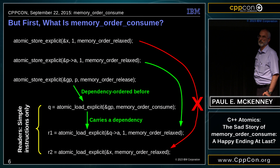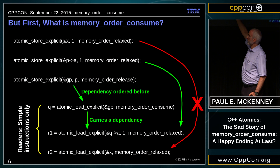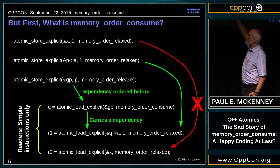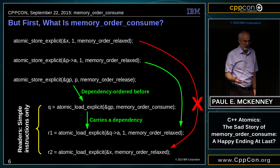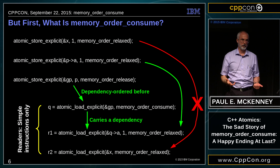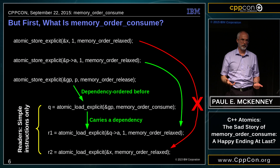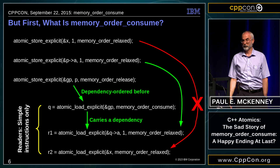Memory_order_consume is nice in that this can just be a normal load on almost all architectures — a very simple instruction, very fast, no artificial slowdown. But there's a penalty; there's no free lunch. If you're going to get the ordering, you have to have dependencies between that initial load and the loads or stores that follow it. It turns out that if you have a linked data structure, that happens very naturally: you go down a pointer and then you do dependent loads off of that pointer. So those dependencies happen very naturally in linked data structures and this technique works very well.